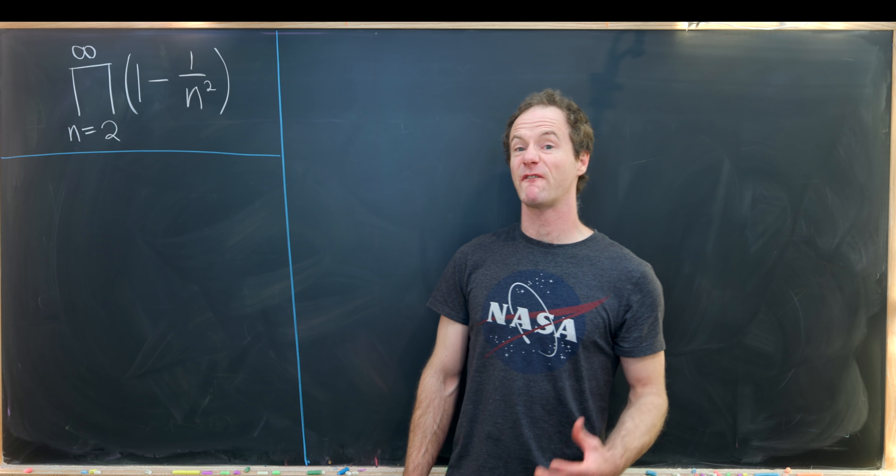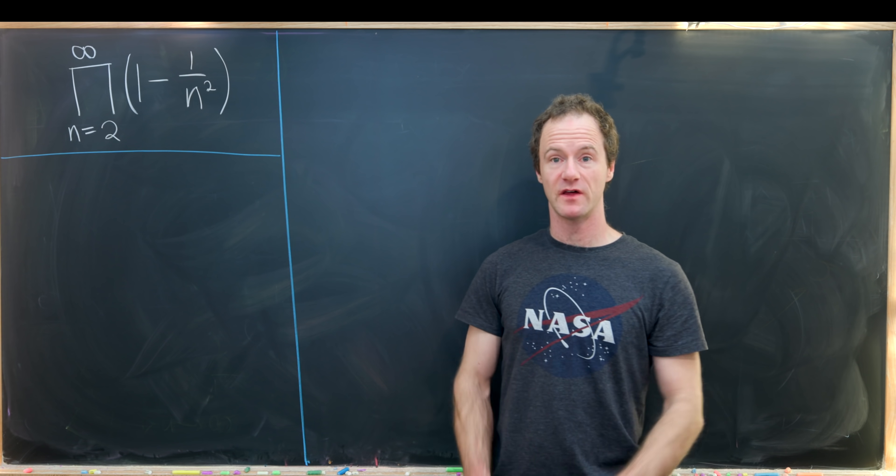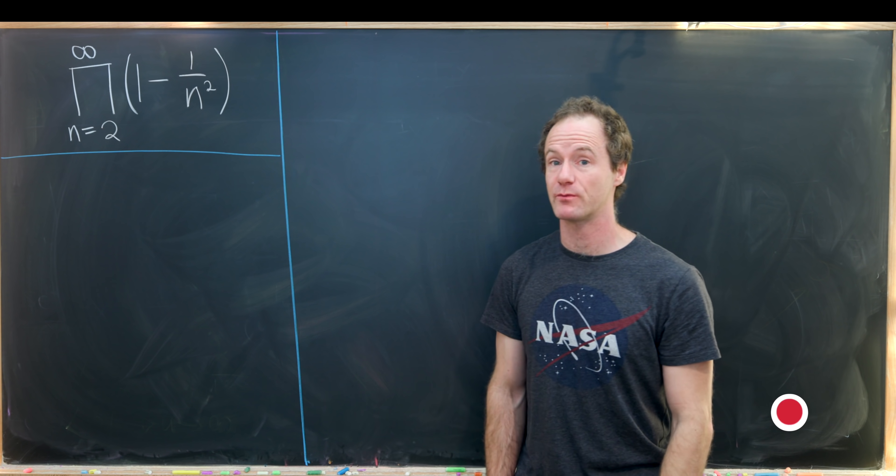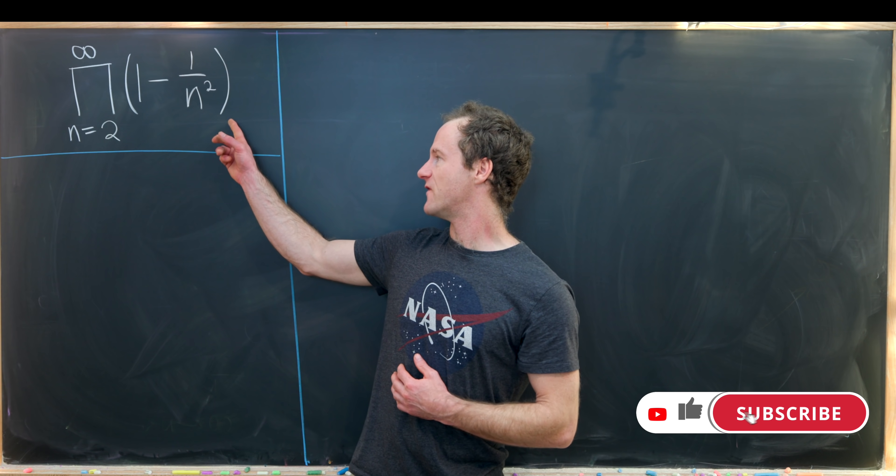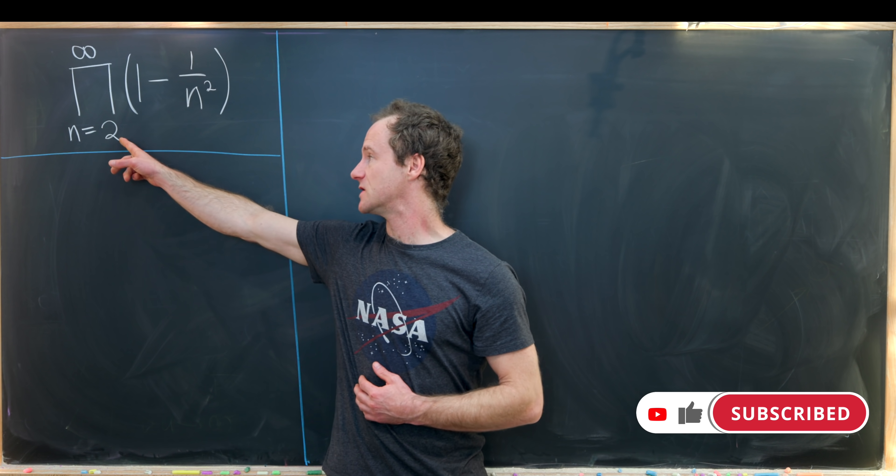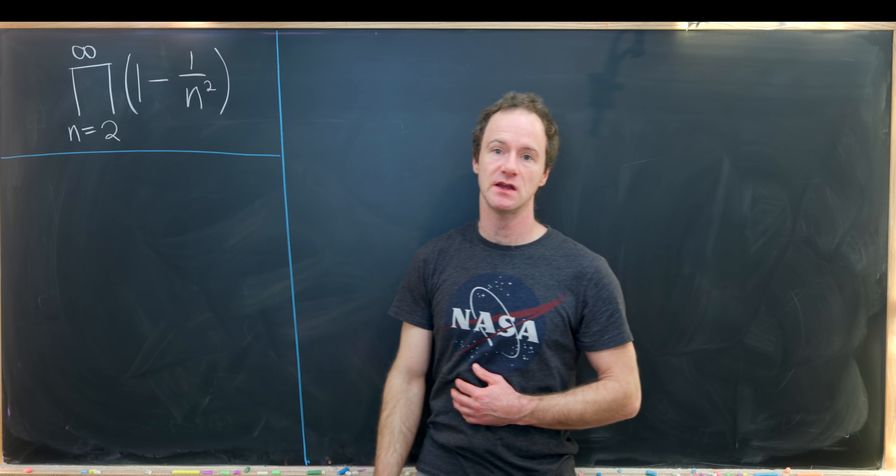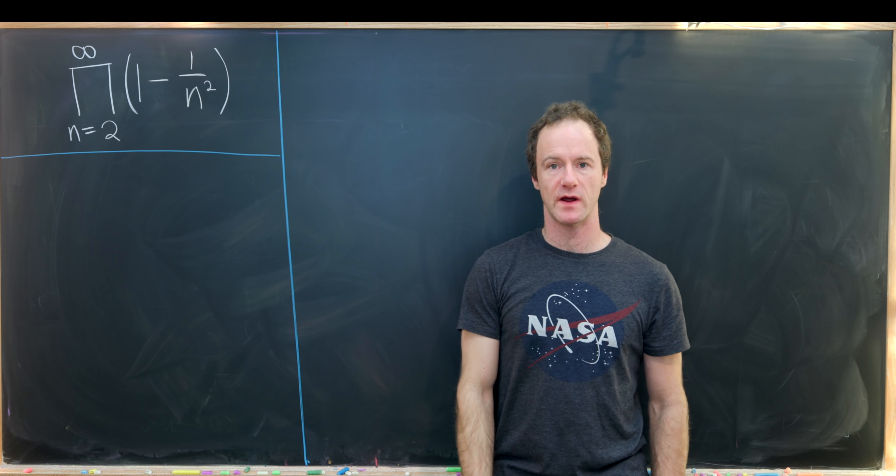Today I've got what I think is a nice first example to play with to get a handle on how infinite products work. In particular, we're going to evaluate the product as n goes from 2 to infinity of 1 minus 1 over n squared.